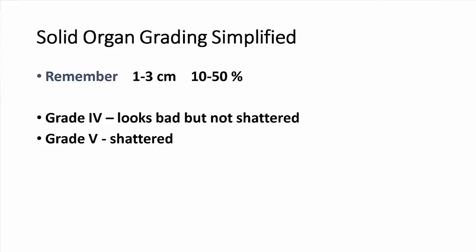Now let's talk about grades four and five — hopefully ones you don't see too many of. A grade five is basically a shattered spleen — it's just a piece of pulp in there. Think of it as a spleen that was taken out, thrown on the ground, jumped on a few times, then put back in for the CAT scan. A grade four is somewhat less than that, but falls outside the grade one, two, three guidelines. Typically there are injuries to the parenchyma or hilar vessels that devascularize good portions of the spleen, but it's not shattered like a grade five.